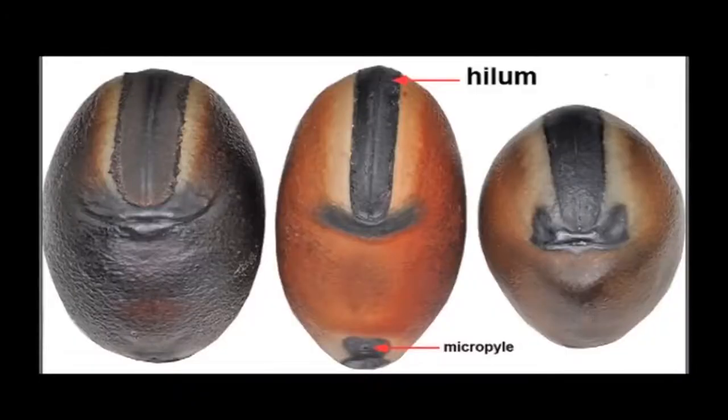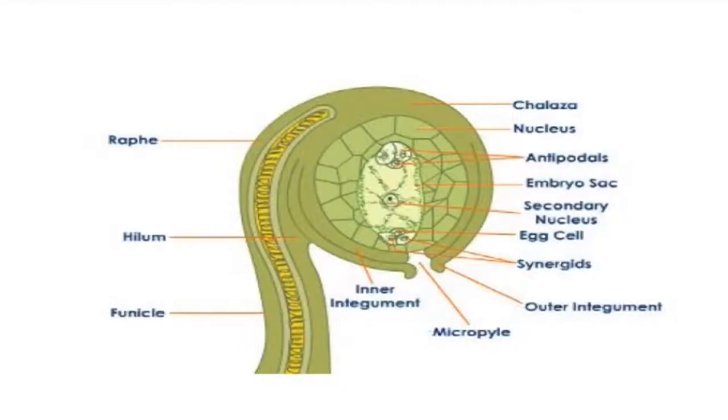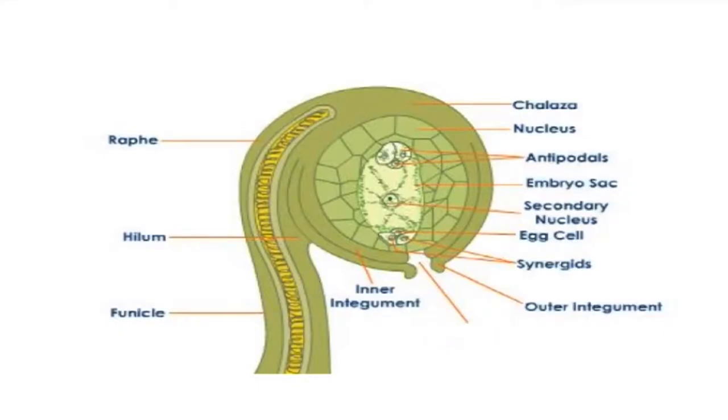Let us learn some of the parts and their descriptions. The first one is the hilum or funicular scar. Funicular scar is present on the seed coat and marks the point at which the seed was attached to the ovary wall or pod wall in case of legumes. The funiculus is the embryo stalk. The micropyle is a canal or hole in the integuments of the nucellus through which the pollen tube usually passes during fertilization.